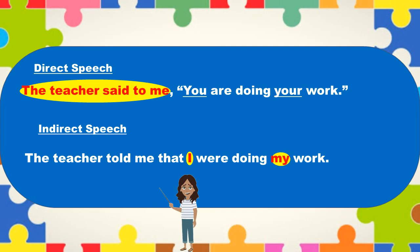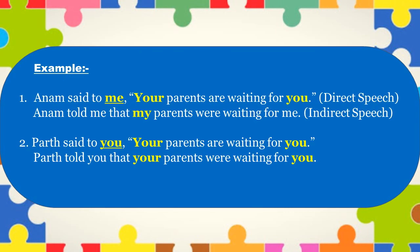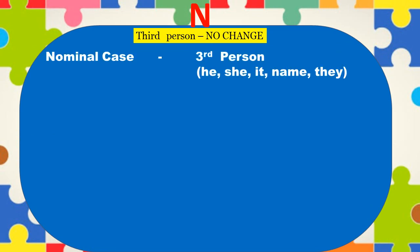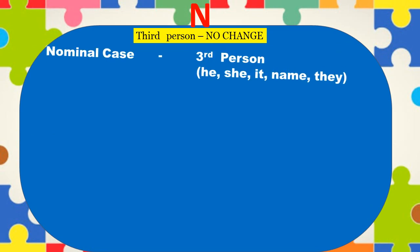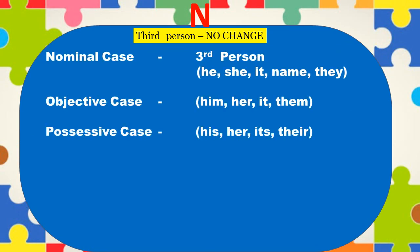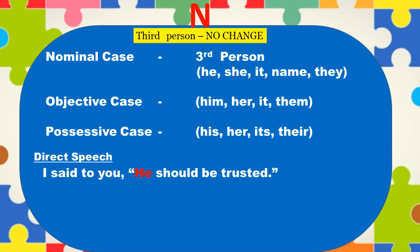Please go through a few more examples. And at last we have N, which stands for no change. When pronouns and possessive adjectives are of the third person — i.e. he, she, it, they — or any name, then we don't make any change.